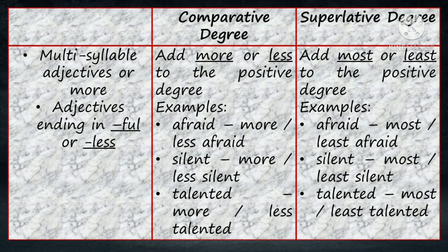For multi-syllable adjectives, or for adjectives ending in -ful or -less, we add more or less at the beginning of the base form to make the comparative degree, and most or least to form the superlative degree. For example, afraid becomes more afraid or less afraid, and most afraid or least afraid. Silent becomes more silent or less silent, and most silent or least silent.